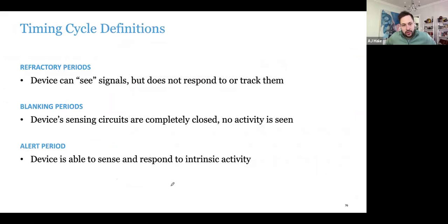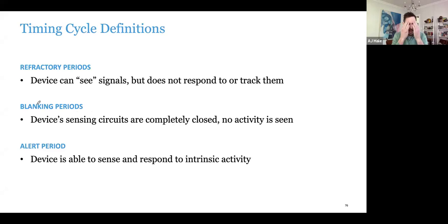So we'll jump right into timing cycles. We're going to go over the basic timing cycles. You have refractory periods — where the device can see the signals but does not respond to them. This would be your PVARP and your VREF. You have blanking periods — where the device completely has its eyes shut and is not paying attention at all. This would be your PVAB (postventricular atrial blanking) and the ventricular blanking period. And finally, alert period — the time when the device has its eyes completely open to respond to any kind of activity.